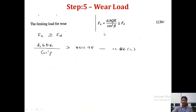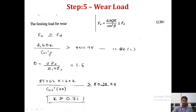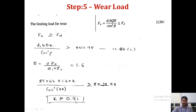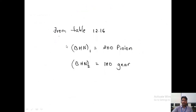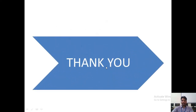Step 5: Wear load calculation. The wear load Fw = D1 × B × Q × K / cos(beta) must be greater than or equal to FD = 8011.98 N. D1 and B are known. The ratio factor Q = 2·Z2 / (Z1 + Z2) = 1.6. From Table 12.16, for the wear strength factor K, the surface hardness required is BHN1 = 200 for the pinion and BHN2 = 180 for the gear. These are the suggested surface hardness values for the gear pair.